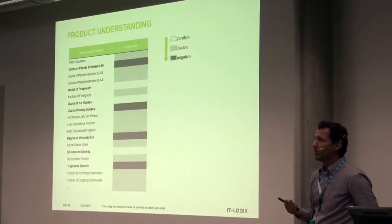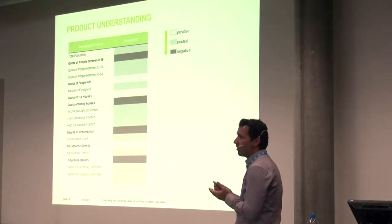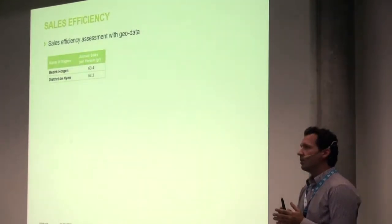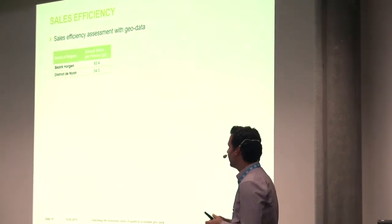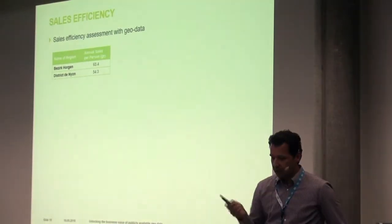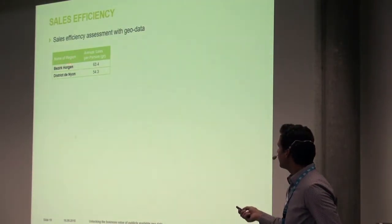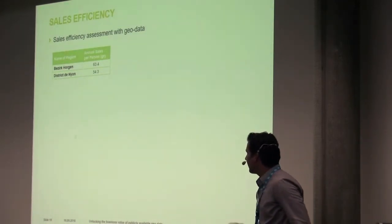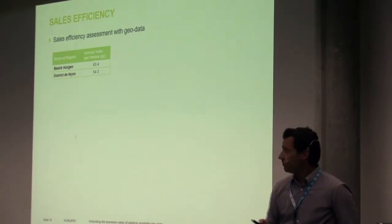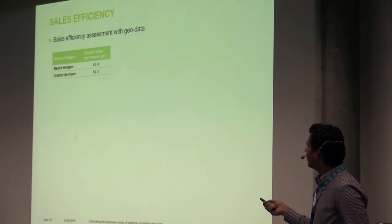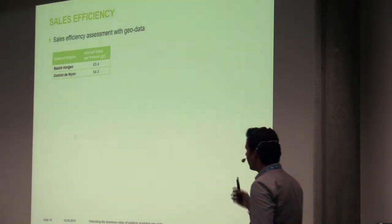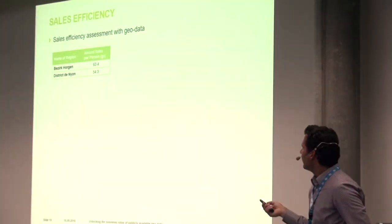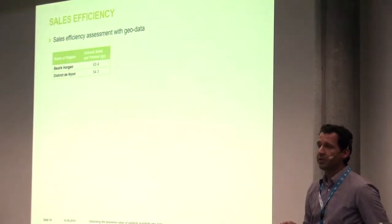This is not only about product understanding — the business people already have a good feeling about their products. It's about taking it one step further and using this information to assess sales efficiency at the regional level. Think about these two sales figures: in a region called Horgien and another called Neon, both normalized by population. The sales in Horgien are around 63 grams annually and in Neon around 54 grams annually. At first glance, someone would say the sales in Horgien are more efficient.